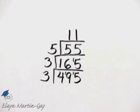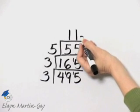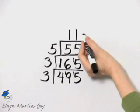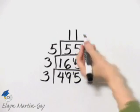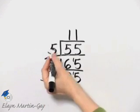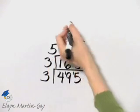You continue this process until the quotient is itself a prime number. So because this quotient is a prime number, I know 495 is three times three times five times eleven.